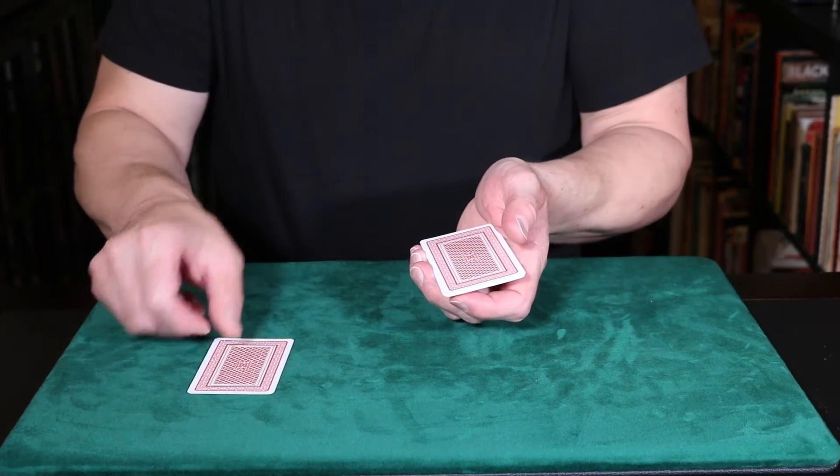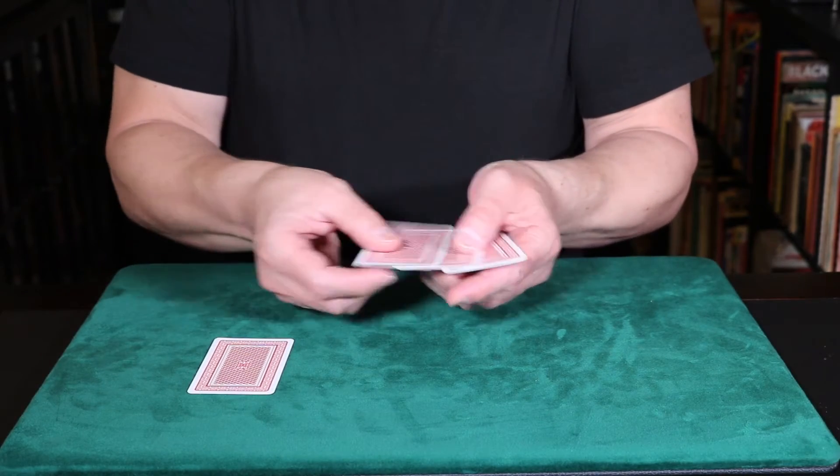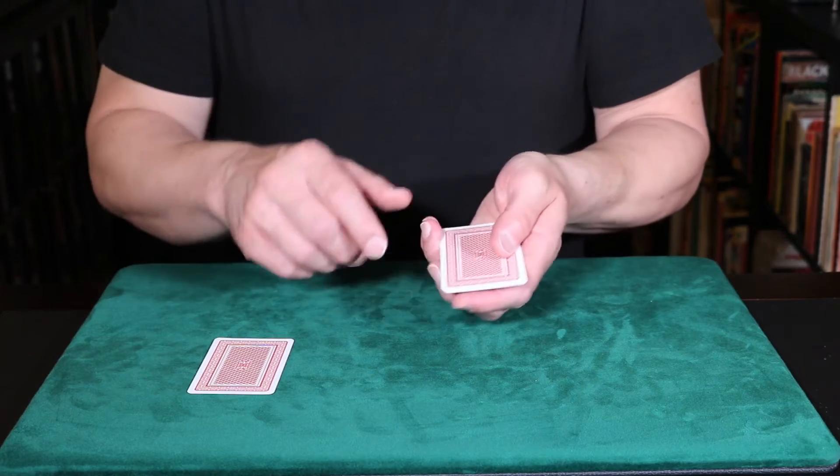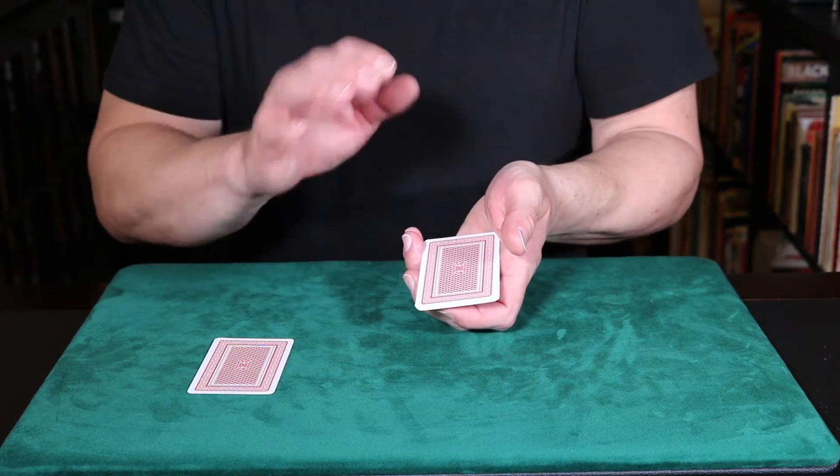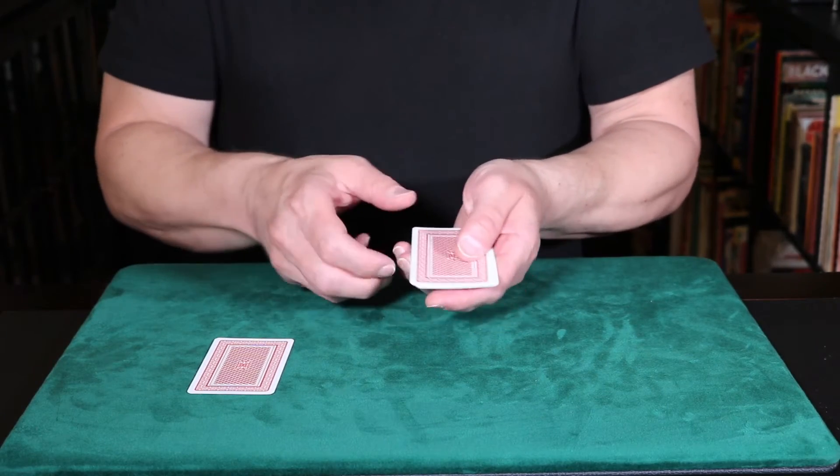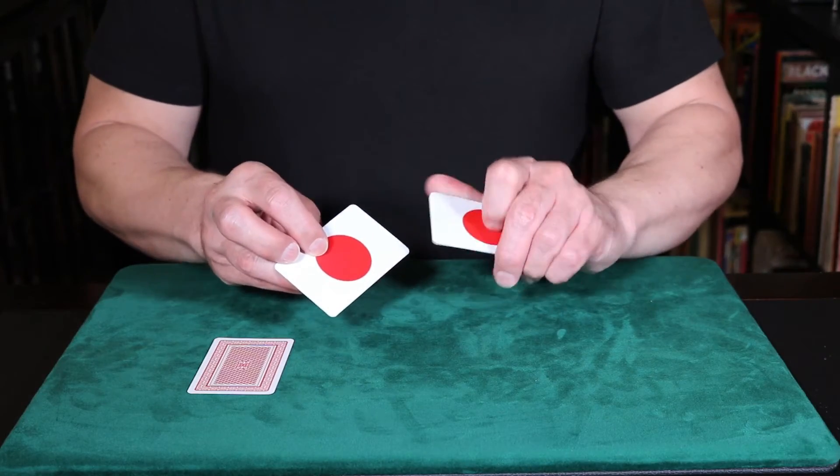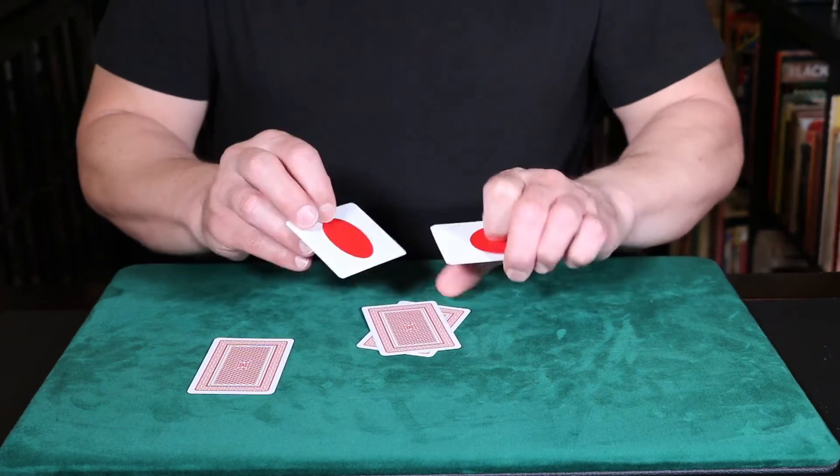Now, you might be wondering why that card might be significant compared to these 5 cards. Because, you see, these 5 cards and this 6th card, they're not traditional playing cards. These cards have dots on them. Notice, all the dots are red.